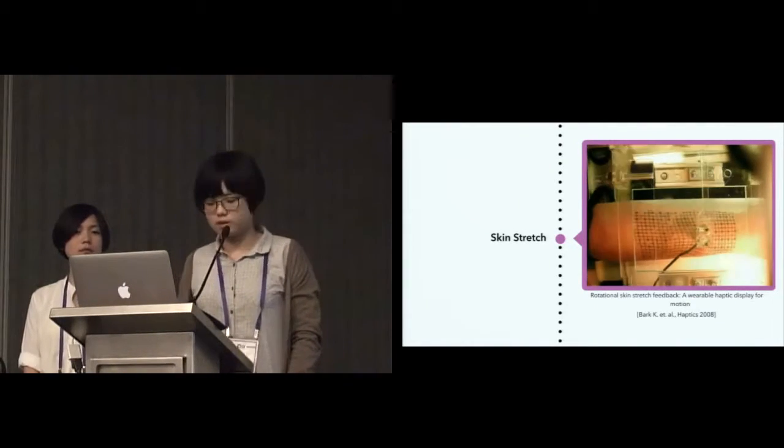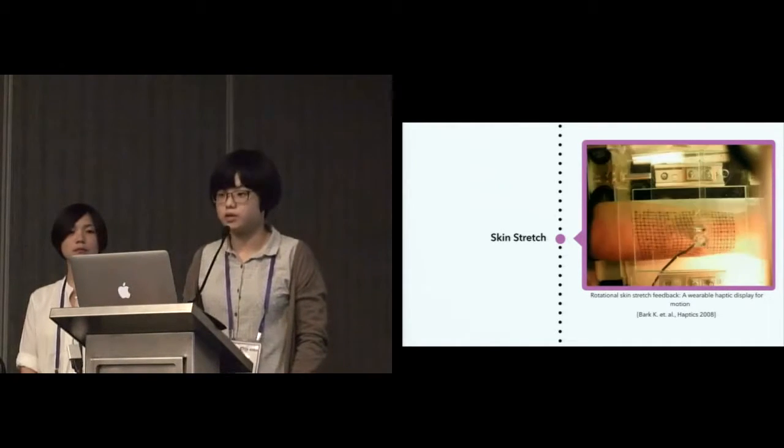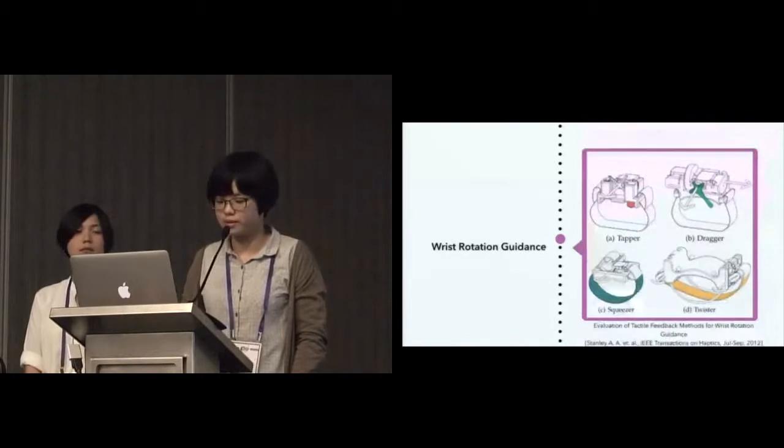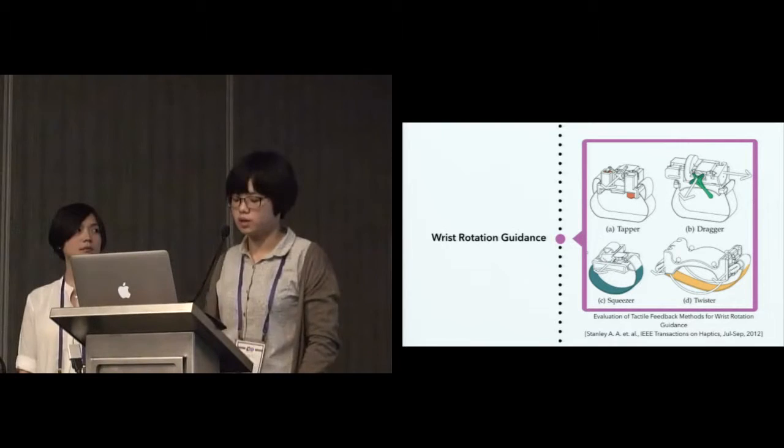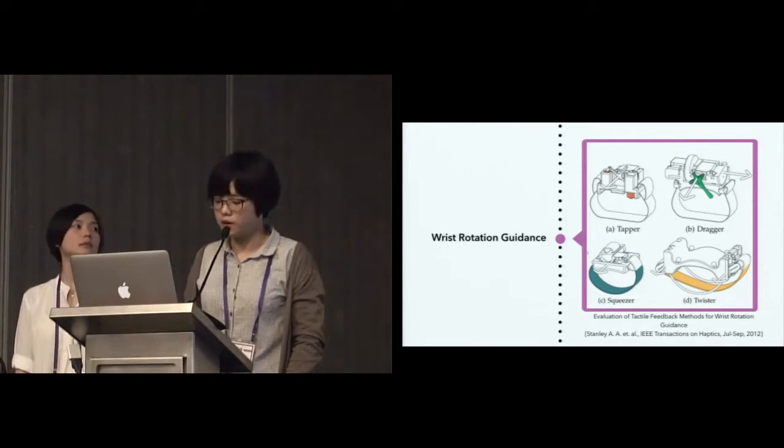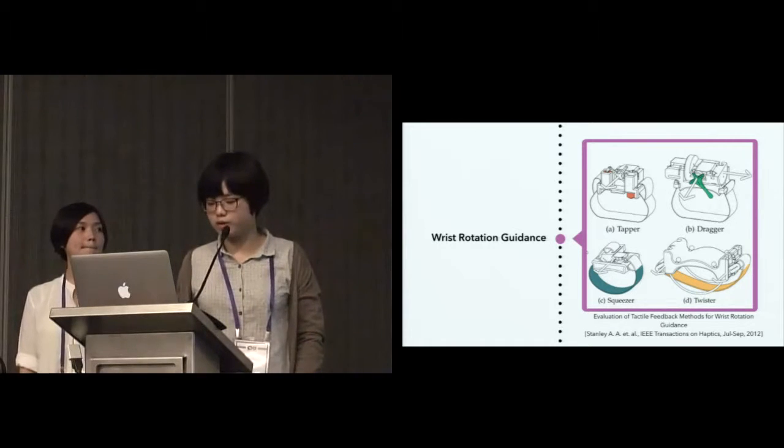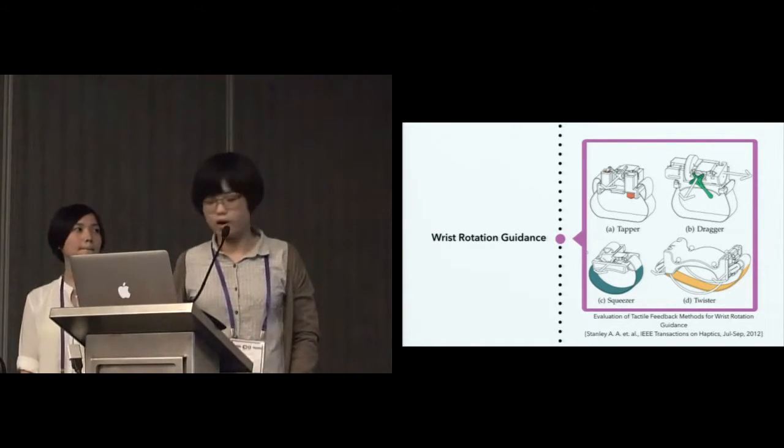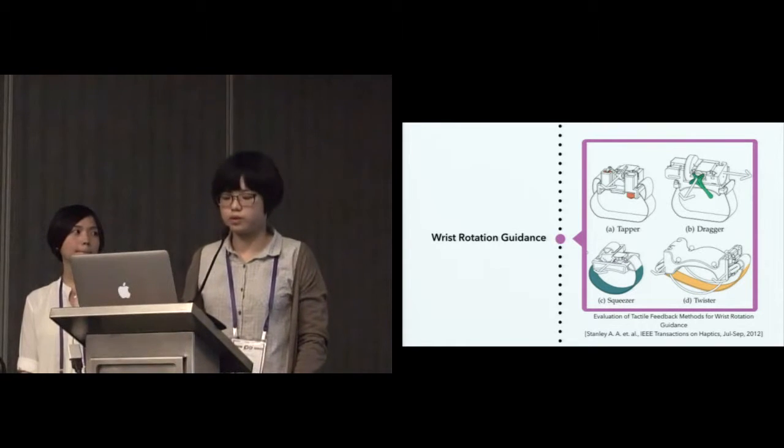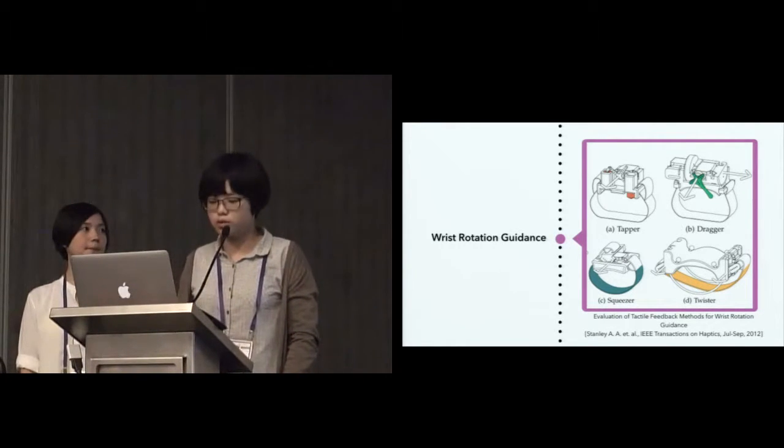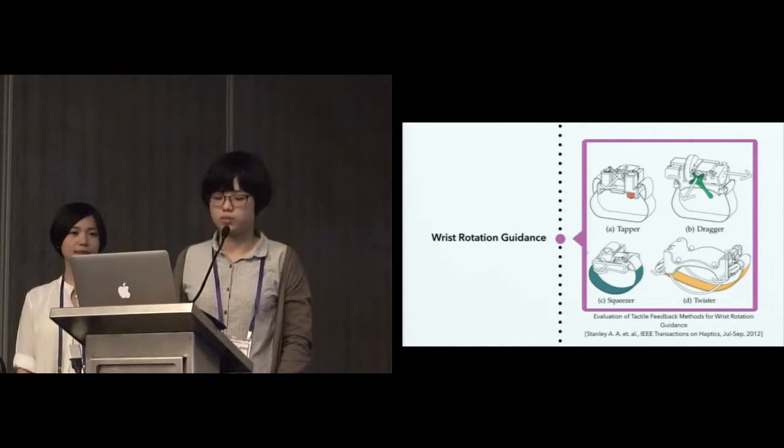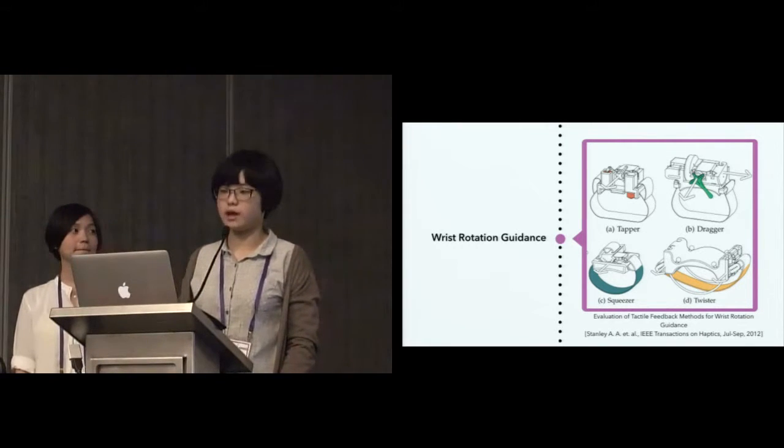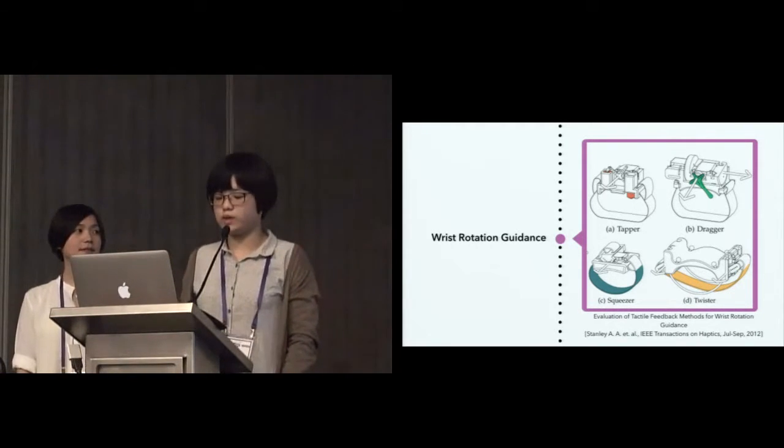Compared to the previous approaches, skin stretch uses a different strategy to guide the movement naturally. For directing users' wrist movement toward a target pose or trajectory, five wearable actuators—tapper, dragger, squeezer, twister, and vibrator—are explored in a study in 2012. This study found that users move most quickly when the cue's direction is transmitted through the location of the tactile stimulus. We wonder if there's any other approach to convey clear direction.